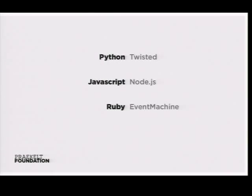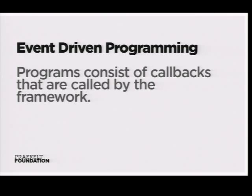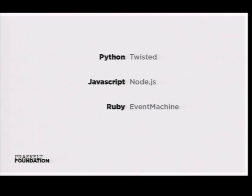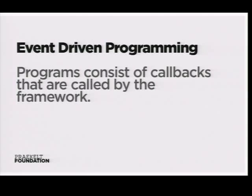Twisted is probably the oldest of these frameworks, but Node seems to be getting a lot of favorable press lately. Twisted is to Python what Node is to JavaScript, what Event Machine is to Ruby. Event-driven programming basically means that programs consist of callbacks that are called by the framework — which is a really fantastic model, especially if your language allows for elaborate anonymous functions as statements.